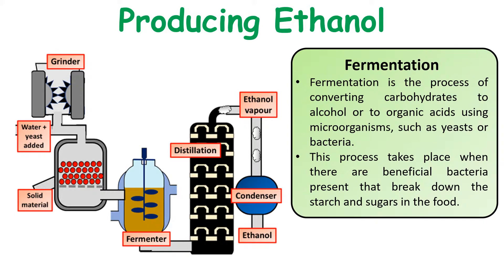The mixture is then fed into a fermenter where the yeast will ferment glucose into ethanol. What comes out of the fermenter will be a mixture of yeast, ethanol and water. We can separate the ethanol out by distillation, because ethanol has a much lower boiling point than water. This forms ethanol vapor which is fed into a condenser, condensing it back down into liquid ethanol.